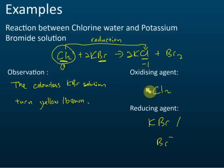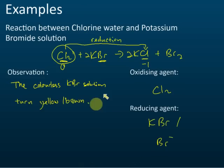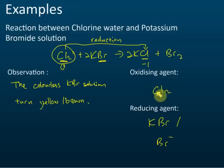For every redox reaction, you need to know the chemical equation, the half equations, the ionic equation, the observations, which species undergoes oxidation and which undergoes reduction, and which is the oxidizing agent and which is the reducing agent. These are the things that will typically be asked — the equations, oxidizing and reducing agents, and the observations.